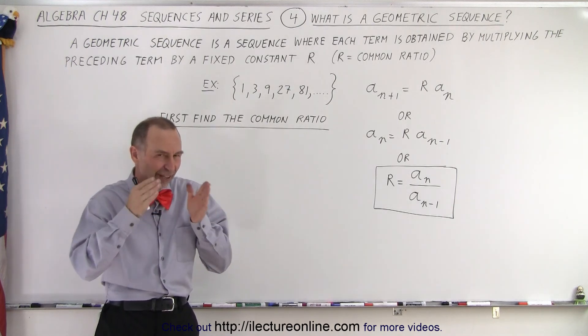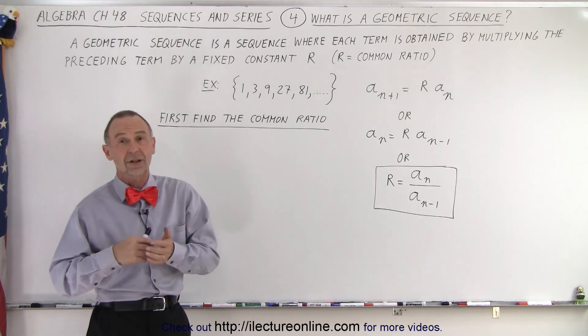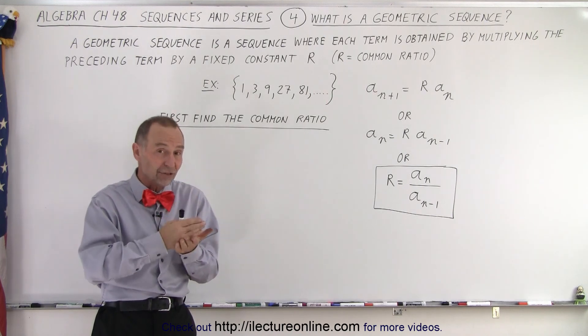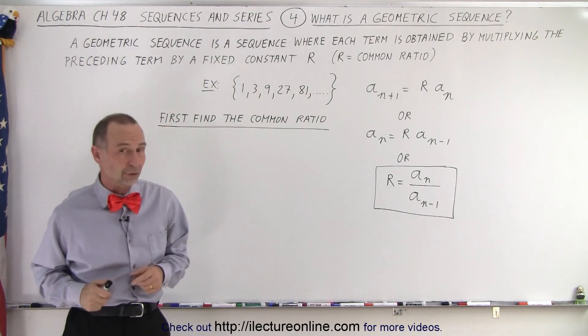So instead of having a difference that's fixed between each one of the terms, like it is in an arithmetic sequence, here we have to multiply the previous one by a fixed number to get the next one, and then multiply that one by the fixed number to get the next one and so forth.